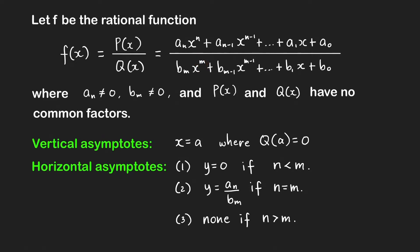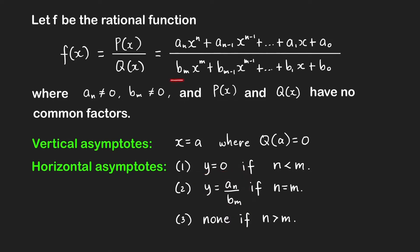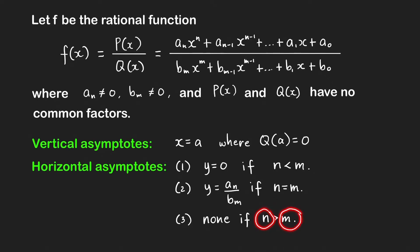If the degrees of polynomials p and q are equal, so when n equals m, the horizontal asymptote is the line y equals a sub n over b sub m, which is the ratio of the leading coefficients of the two polynomials. Here a sub n is the coefficient of x to the n, and b sub m is the coefficient of x to the m. If the degree of p is larger than the degree of q, then we don't have a horizontal asymptote.